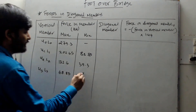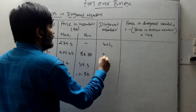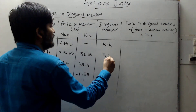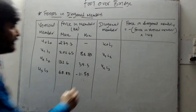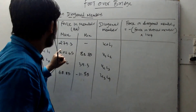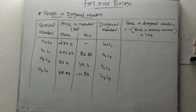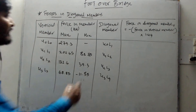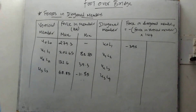The diagonal members, again referring to the figure, are: U0L1, U1L2, U2L3, and U3L4. The force in the diagonal member equals −(Force in vertical) × 1.414. For the first diagonal member, the maximum force is −286.5 kN.